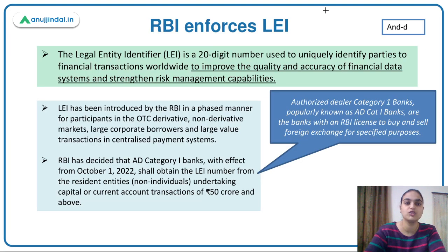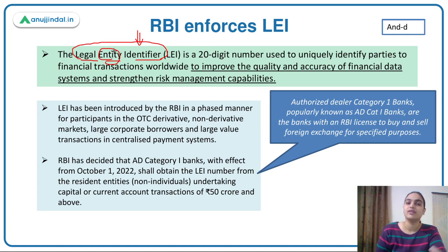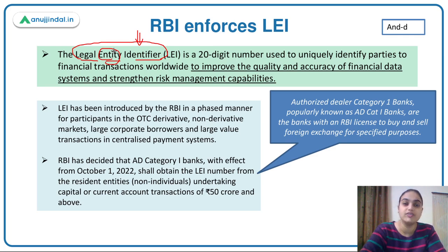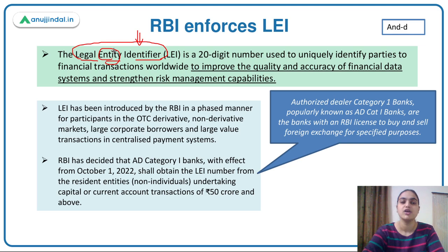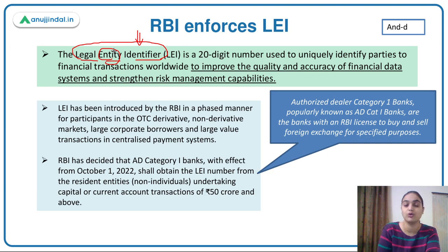LEI stands for Legal Entity Identifier. As the full form suggests, it is basically an identification number given to entities. Different parties carry out financial transactions worldwide — companies might be involved in various current or capital account transactions. If a number is given to entities to identify them, we can keep track of the financial transactions going between them.